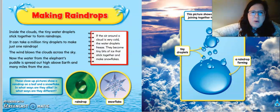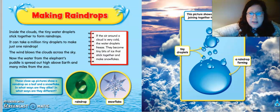Inside the clouds, the tiny water droplets stick together to form raindrops. It can take a million tiny droplets to make just one raindrop. The wind blows the cloud across the sky. Now the weather from the elephant's puddle is spread out high above earth and many miles from the zoo. So inside of a cloud, we can have a raindrop or it could come down as a snowflake, depending on the temperature of the atmosphere. If the air around the cloud is very cold, the water droplets freeze. They become tiny bits of ice that stick together and make snowflakes. So this picture shows tiny water droplets joining together to make one raindrop. So those are the droplets and they form one raindrop. So this takes some time.